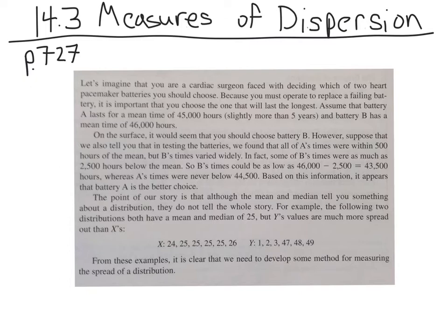But what if we do some more digging? We find out that all of A's times were within 500 of the mean. So A was 45,000, right? So that means you could go 45,500 on the high end, or 44,500 on the low end. But B's times varied widely. Some of these times were as much as 2,500 hours below the mean. So that 46,000, you could be 2,500 below that average. So if you subtract that, you'll get 43,500. That's the low end for battery B. Obviously, for battery A, the low end is 44,500. So just looking at the mean doesn't tell you exactly what decision you should make. Depending on the variation, one might actually be better or worse.